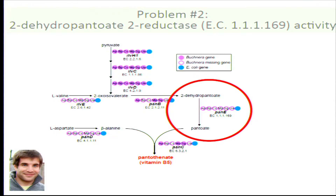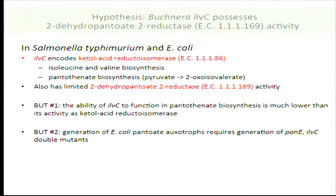Now to the second problem: complementation of PAN-E. It turns out that in Salmonella and E. coli, the gene ILVC, which encodes ketoacid reductoisomerase — used in the top part of the pathway conserved across all Bucknera lineages, and for isoleucine and valine biosynthesis — also has limited 2-dehydroxopantoate 2-reductase activity in E. coli and Salmonella. That's the PAN-E activity that's been lost.